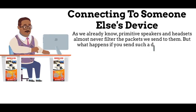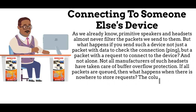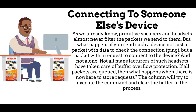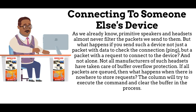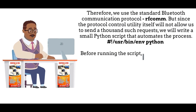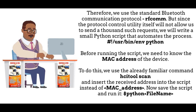As we already know, primitive speakers and headsets almost never filter the packets we send to them. But what happens if you send such a device not just a packet with data to check the connection, but a packet with a request to connect to the device — and not just one? Not all manufacturers of such headsets have taken care of buffer overflow protection. Therefore, we use the standard Bluetooth communication protocol, and since the protocol control utility itself will not allow us to send a thousand such requests, we will write a small Python script that automates the process.